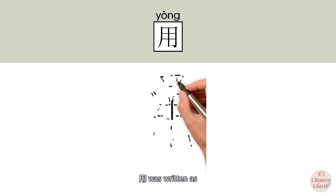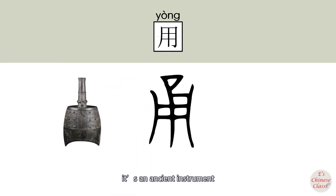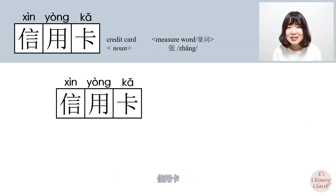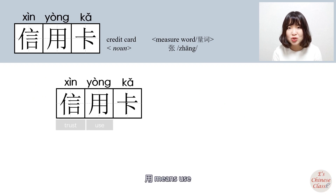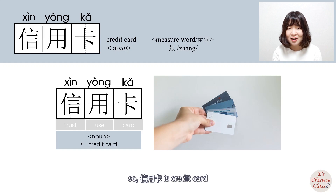In ancient script, 用 was written as an ancient instrument. In modern Chinese, 用 means use. So 信用卡: 信 means trust, 用 means use, 卡 means card — 信用卡 is credit card.